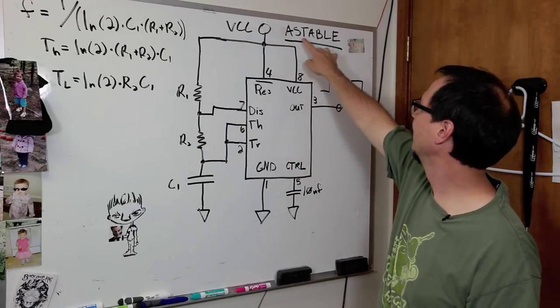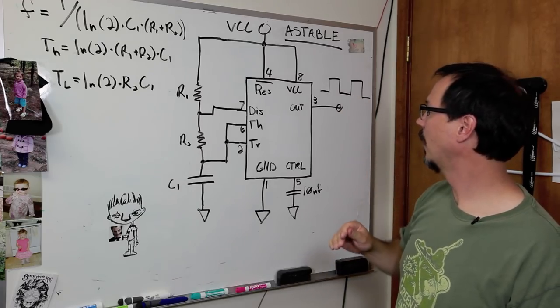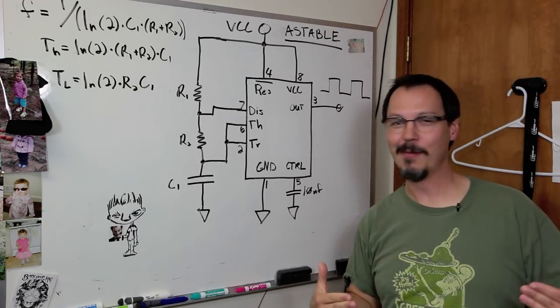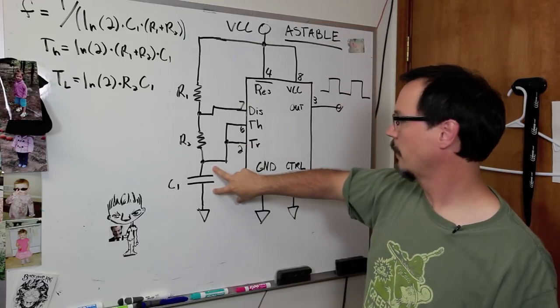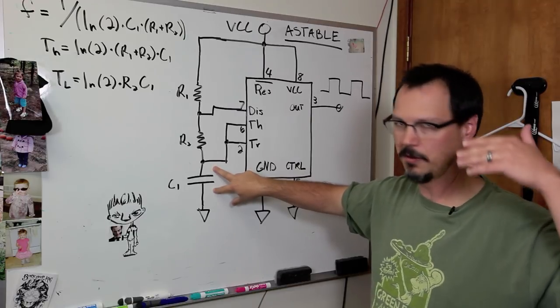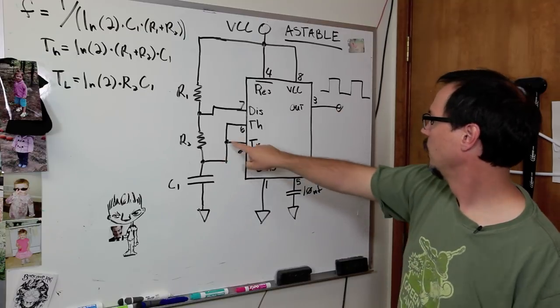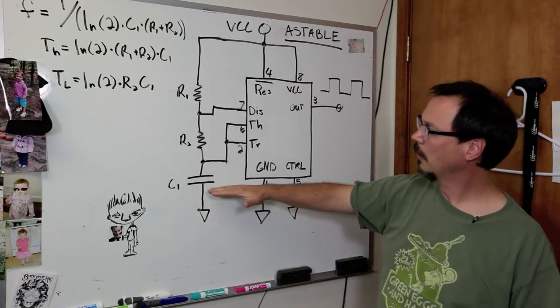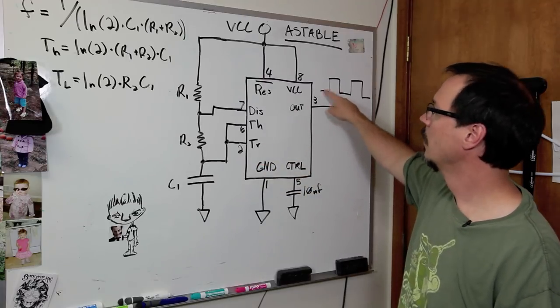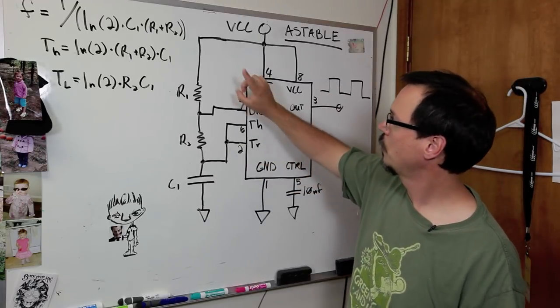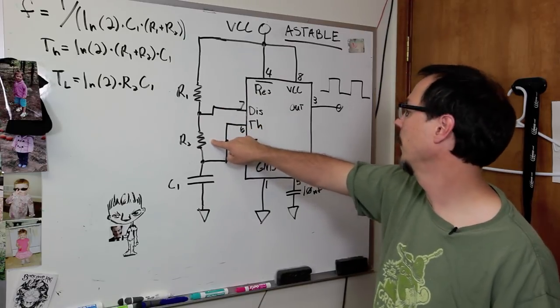This configuration is called astable. Astable. It does not have a stable place. It's basically bouncing between ground and VCC. If you assume that the cap, and this is, you know, T equals zero, sort of like that, the beginning of the thing. The cap is charging up. Trigger has been pulled lower than 1/3 VCC, so the output is low, okay? Now, when the cap is charging up, it's charging through R1 and R2. Fair enough?